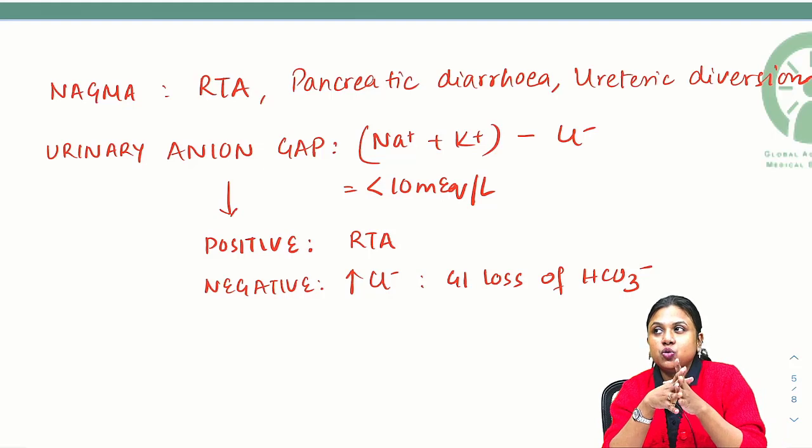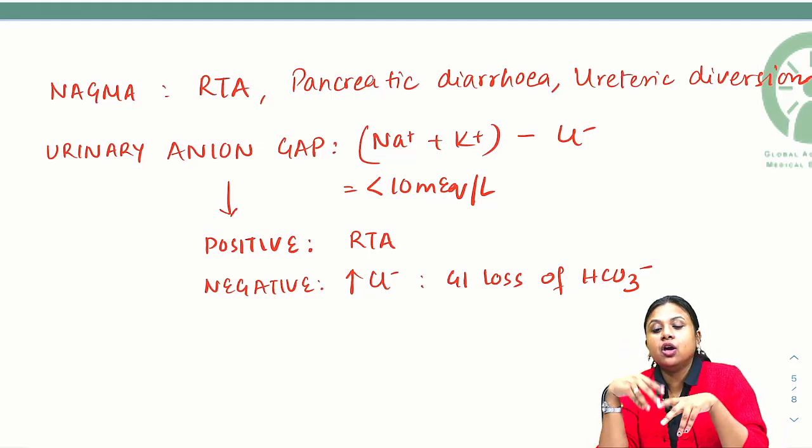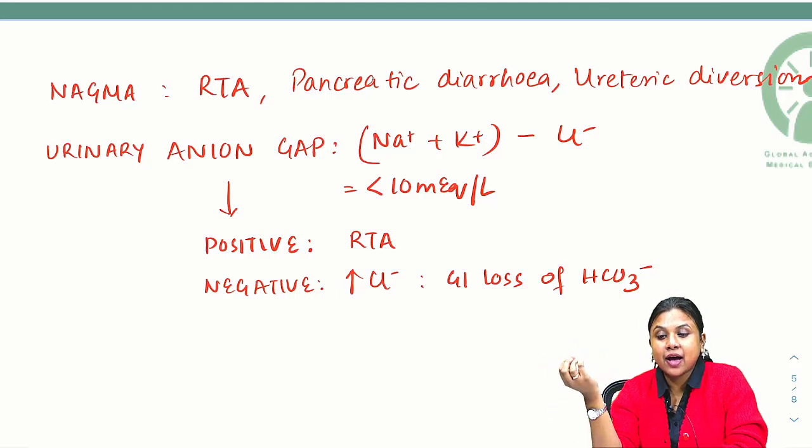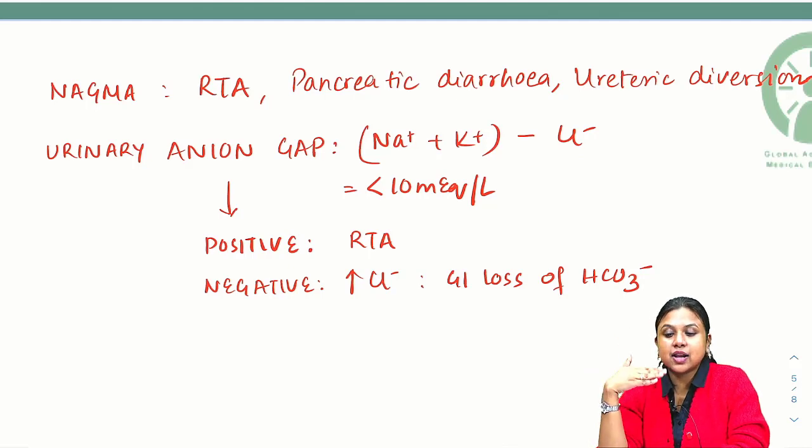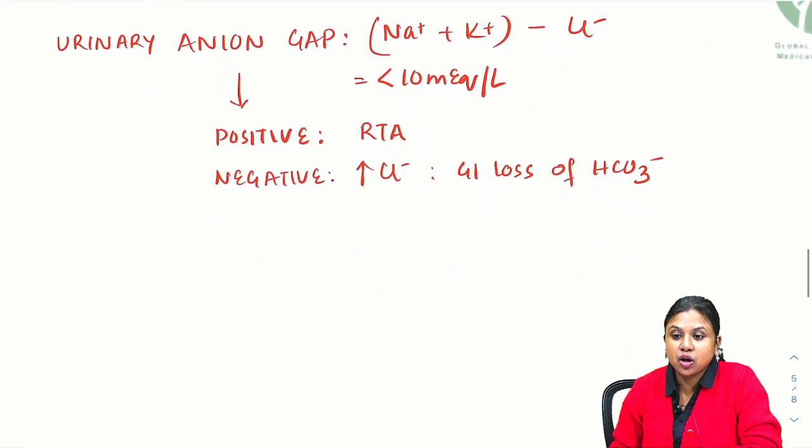Sometimes, if we are not able to say whether purely a normal anion gap metabolic acidosis or a high anion gap metabolic acidosis is running, there can be a mixed pathology. For that, we need to calculate the delta ratio. Let us calculate the delta ratio and see the formula.